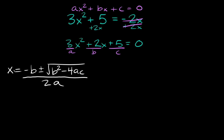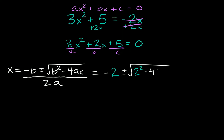So then here we're going to get that x is equal to — negative, and then our b term is positive 2, so we put a 2 right there — and then plus or minus the square root of b squared, so that's 2 squared minus 4ac, so a is 3 and c is 5. That's all over 2 times a, and a again is 3.